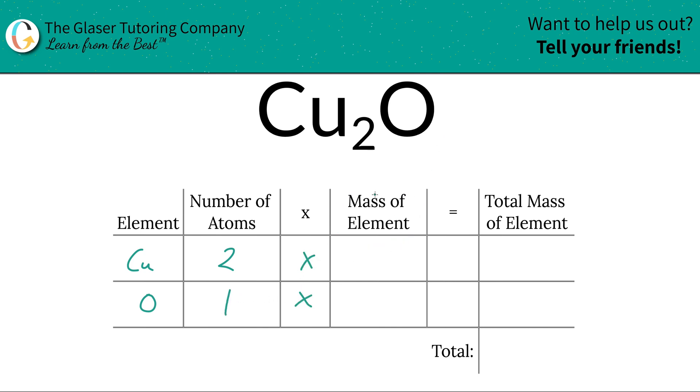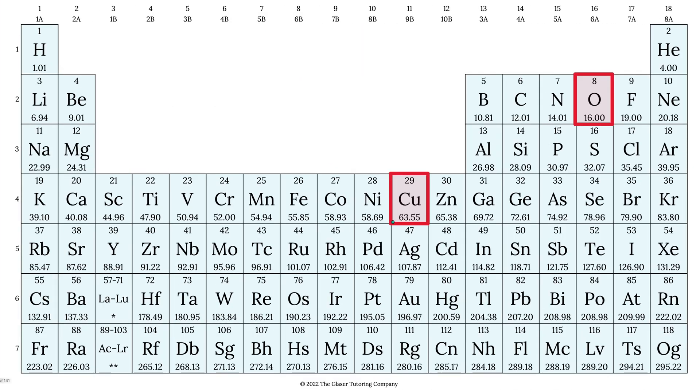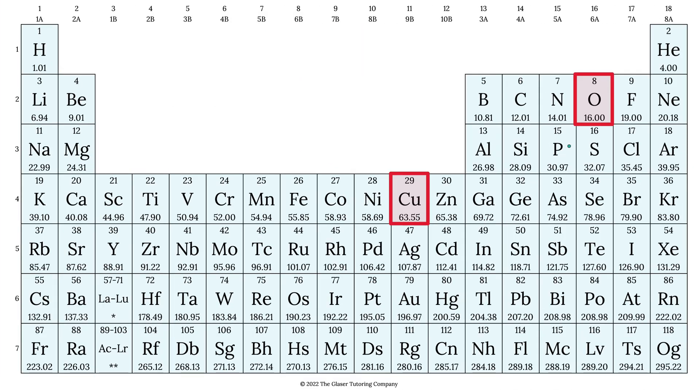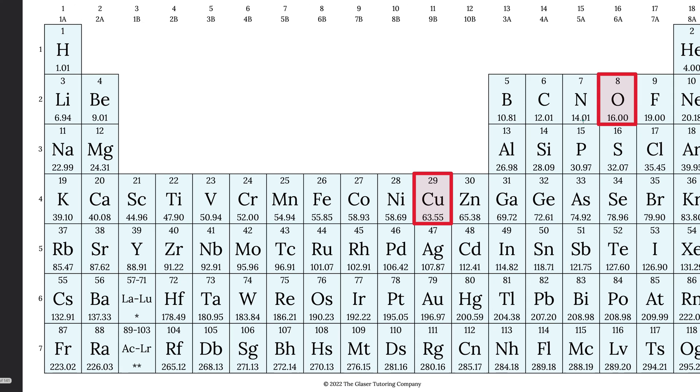Then we're going to take those number of atoms, multiply it by the mass of each particular element. That's found on the periodic table. Here's the mass of copper, 63.55, and oxygen is about 16. So those are the masses we're going to write down.